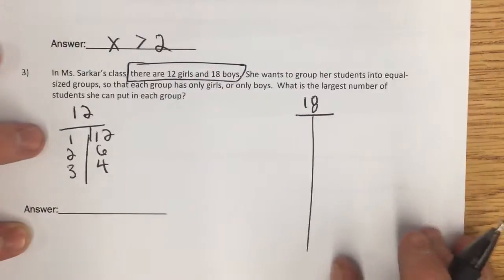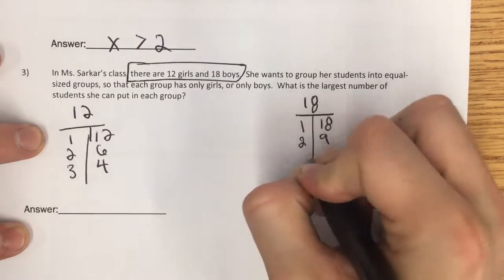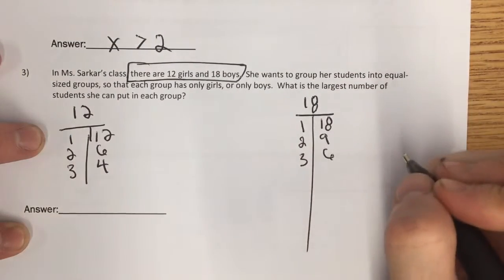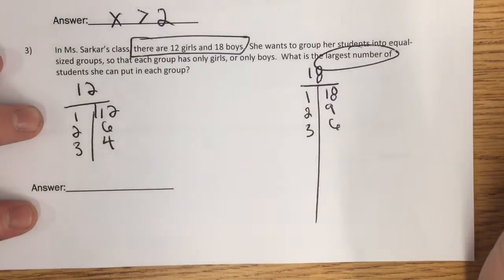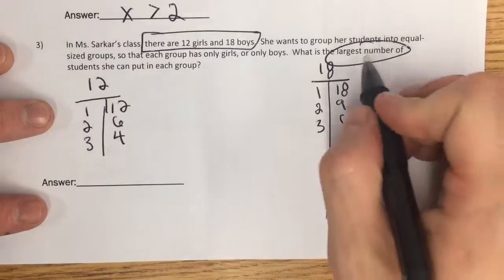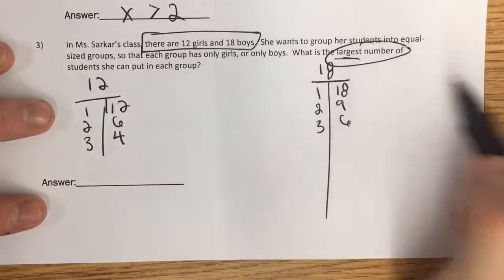Then for 18, these are the boys, I could do one group of 18, two groups of 9, three groups of 6, and that's it. So it says, what's the largest number of students that she can put in each group? Well, this sounds a lot like the greatest common factor, the largest grouping they each share.